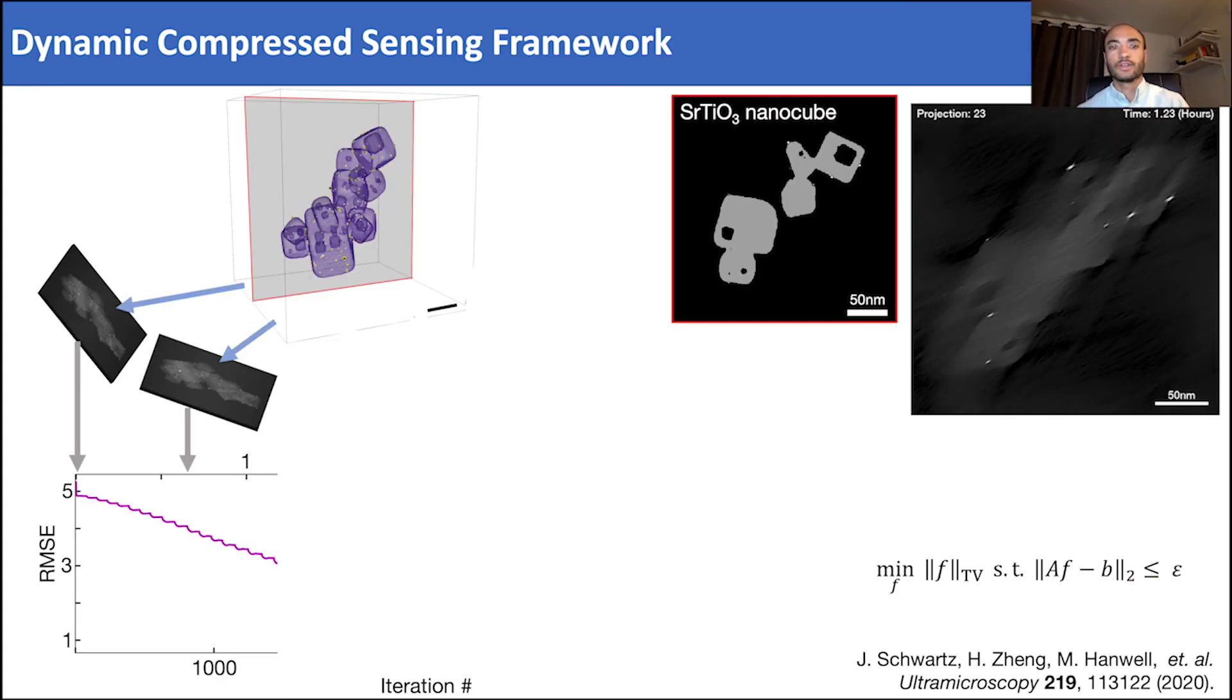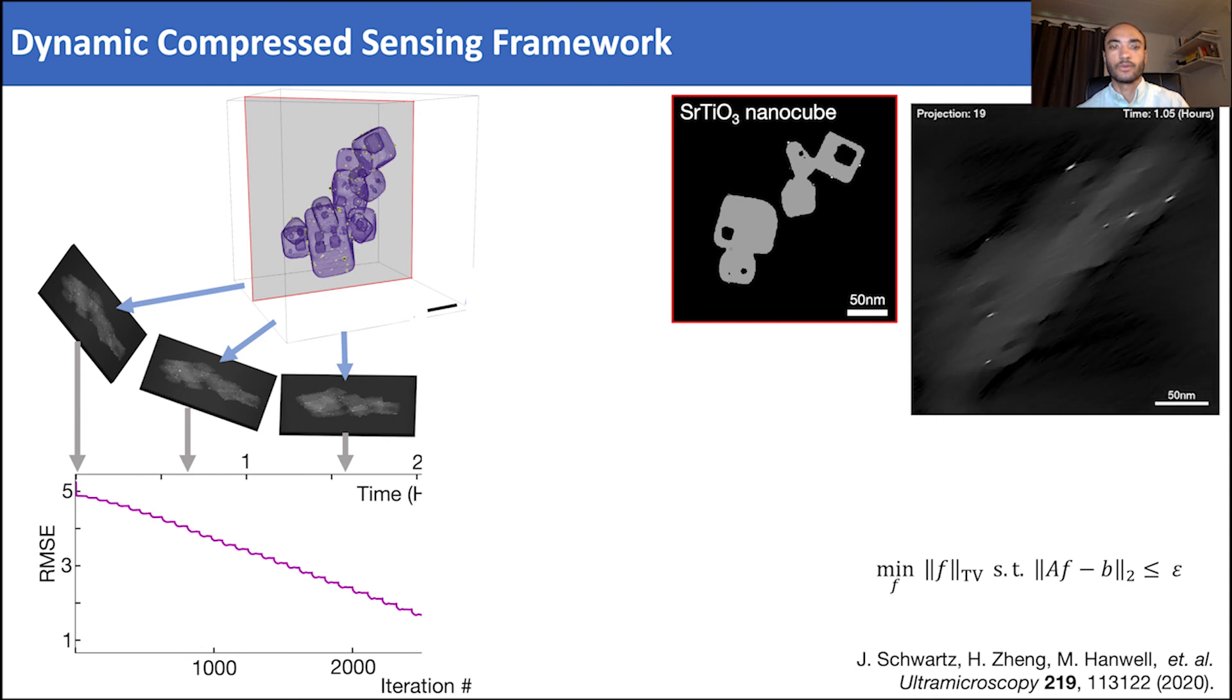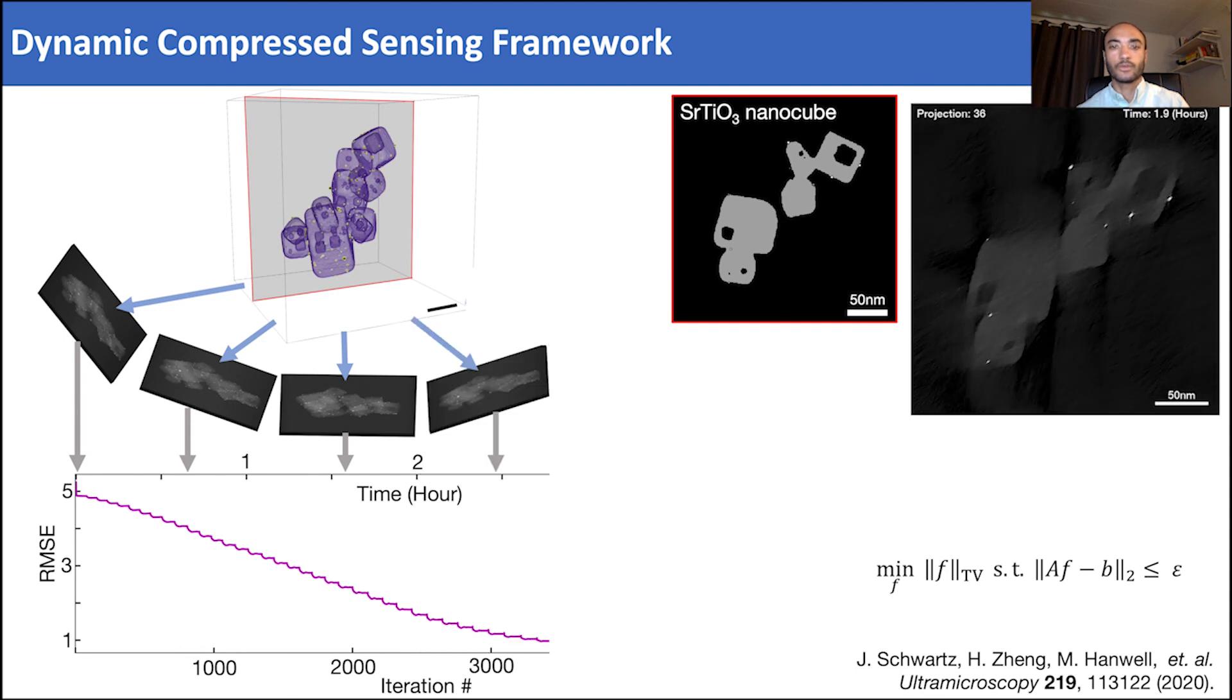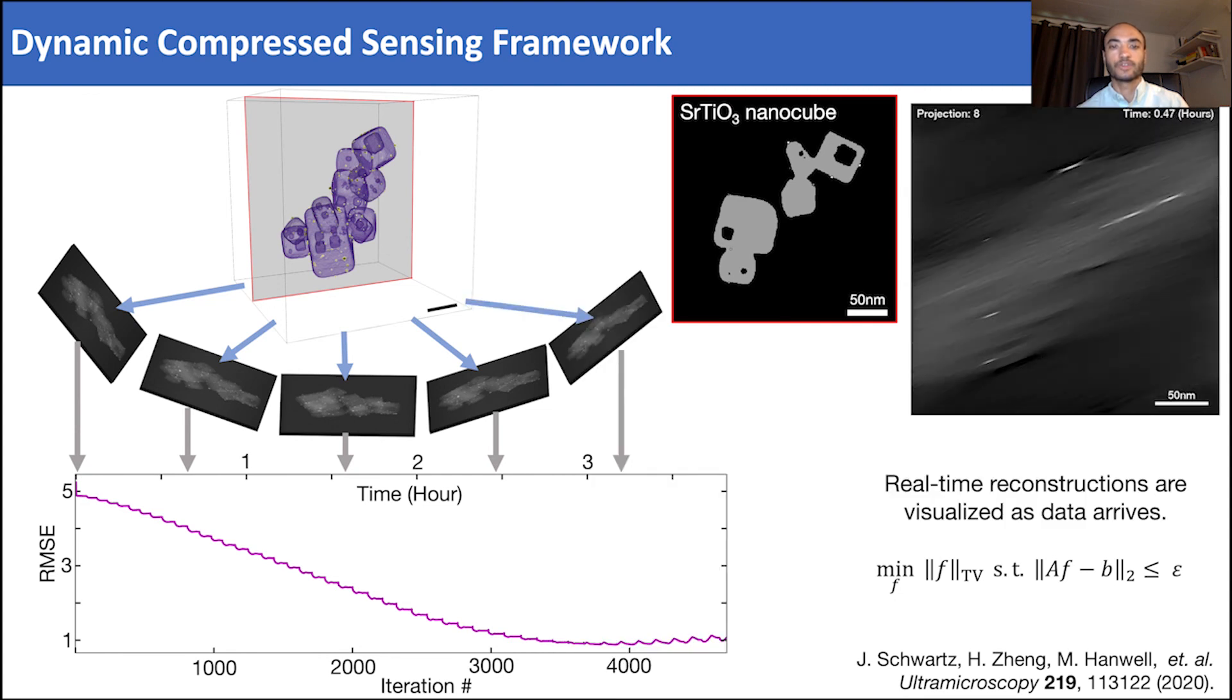TomViz also contains novel dynamic compressed sensing integrated within the software. Here, a real-time simulation is demonstrated on a strontium-titanate nanocube decorated with gold nanoparticles. Projections here are generated along a plus or minus 75 tilt range with 2 degree tilt increments, matching the experimental conditions from the real-time experimental demo. We can observe that the root mean square error descends downwards with a staircase-like pattern, indicating more projections are available. The incorporation of new information continuously drives the RMSE down, and the error converges as early as 70% of the experiment.